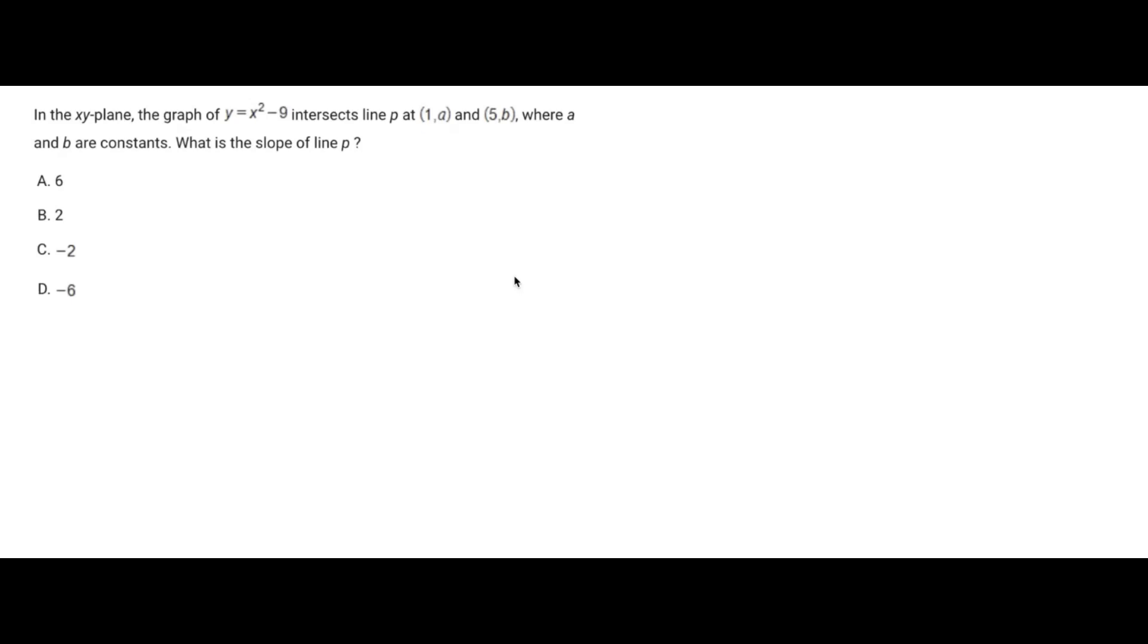Hey everyone, so for today's SAT problem, it says in the xy plane, the graph of y equals x squared minus 9 intersects the line p at (1,a) and (5,b), where a and b are constants. What is the slope of line p?